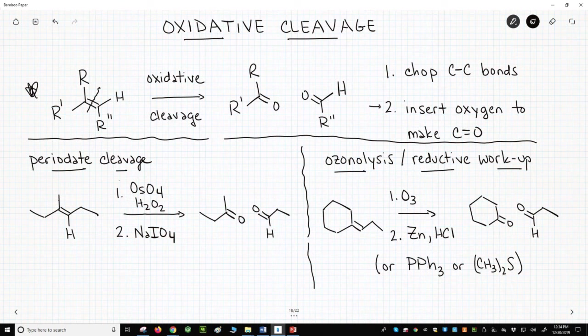The products of this type of oxidative cleavage will always be either aldehydes or ketones. Whether you get an aldehyde or a ketone is determined by the number of R-groups on the carbons of the alkene.